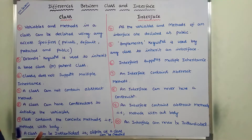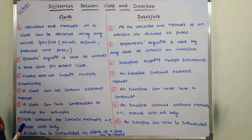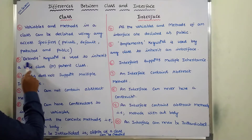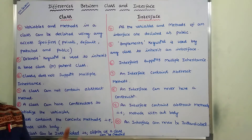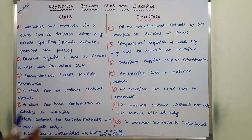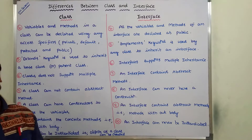Fifth difference: the 'extends' keyword is used to inherit a base class or parent class — to acquire the properties of the base class by the child class or derived class. In the case of an interface, the 'implements' keyword is used by any class to inherit the properties of an interface. So interface-to-class inheritance requires the implements keyword.